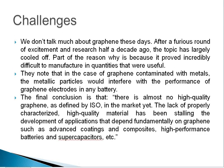Some more challenges in graphene FET fabrication: we don't talk much about graphene these days after a furious period of excitement and research half a decade ago, as the topic was largely curtailed. Part of the reason is that it proved incredibly difficult to manufacture in quantities that were useful. It is difficult to produce high-quality graphene at mass production level. In the case of graphene contaminated with metals, the metallic particles would interfere with the performance of the graphene electrode in any battery. The final conclusion is that there is almost no high-quality graphene as defined by the ISO in the market yet, and this lack of properly characterized high-quality material has been stalling the development of applications that depend fundamentally on graphene, such as advanced coatings, composites, high-performance batteries, and supercapacitors.